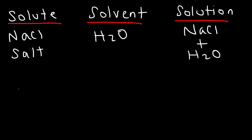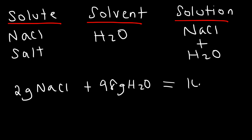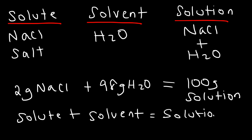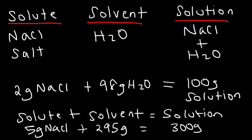For example, if I mix 2 grams of sodium chloride with 98 grams of water, I will have 100 grams of solution. In terms of mass, the solute plus the solvent equals the solution. So if I have 300 grams of solution and 5 grams of sodium chloride, I can figure out that there are 295 grams of water — because it has to add up to 300. The solvent dissolves the solute, and the solute is dissolved by the solvent.